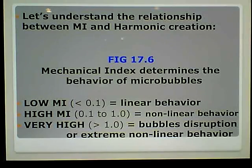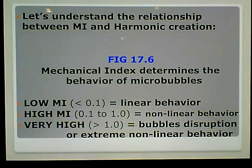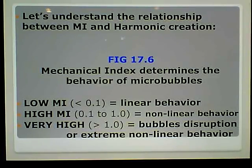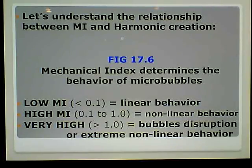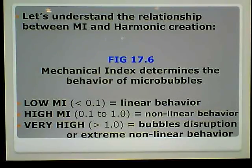Let's break it down further now that we've added mechanical index into the mix. If we have a low MI — less than 0.1 — we have linear behavior, and lower MIs are not going to give us harmonics. Harmonics come from non-linear behavior. If we have an intermediate MI of 0.1 to 1.0, we have non-linear behavior and we're going to have some harmonics.